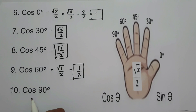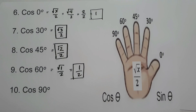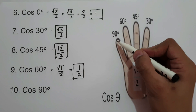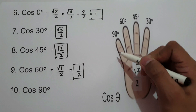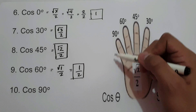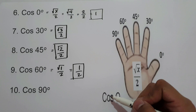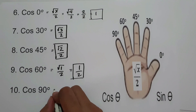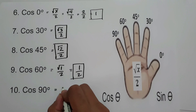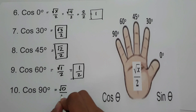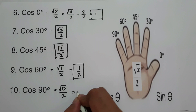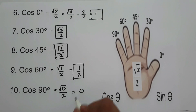For cosine 90°, there is no finger between 90° and cosine. That means x is 0, so square root of 0 over 2, which is simply 0. Cosine 90° is 0.